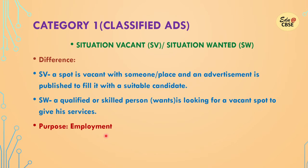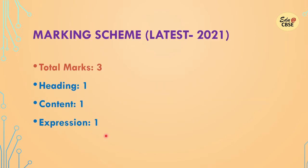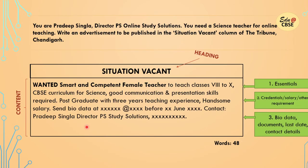Now let's move on to the marking scheme. The latest marking scheme of 2021: the question will be of three marks — heading is one mark, content is one mark, and expression is one mark. Now we will take a question and with this question I will discuss the format and marking scheme.